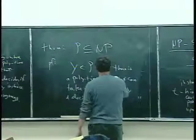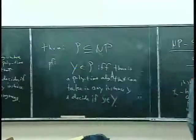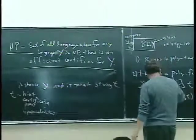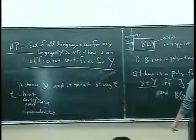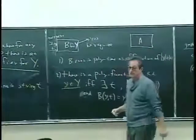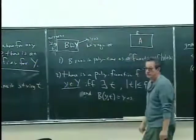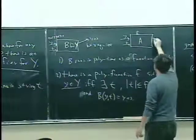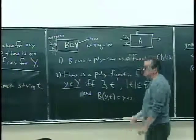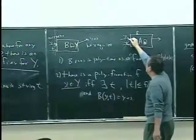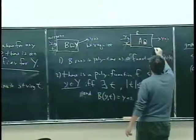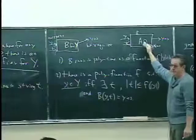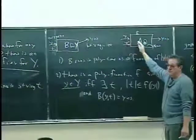So if there is a polynomial time algorithm, call it capital A, we want to see there's in fact an efficient certifier for problem Y. What is B going to look like? It's going to be A sitting inside. B takes in little y, takes in whatever the hint is, and ignores the hint. Then it does its computation on y, and out comes yes.